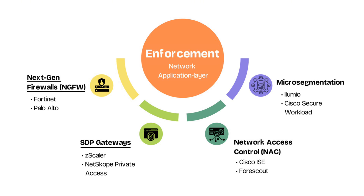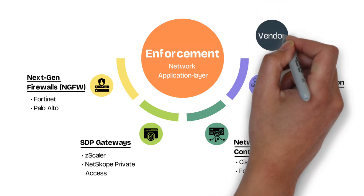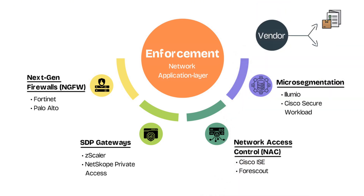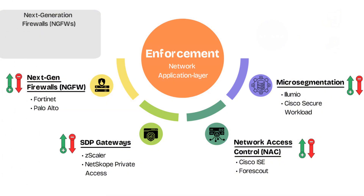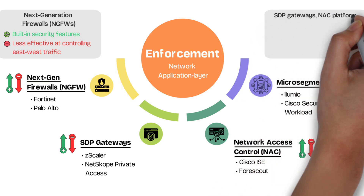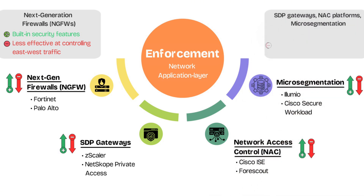The type of technology used to implement the PEP largely depends on the vendor, the type of product portfolio they have, and their particular area of expertise. While a detailed comparison is beyond the scope of this video, it's important to understand that each solution comes with its own strengths and weaknesses. For instance, traditional next-gen firewalls offer a broad set of built-in security features, but they may be less flexible in controlling east-to-west traffic within a network. On the other hand, solutions like STP gateways, NAC platforms, and micro-segmentation tools may not offer all the broad support of security inspection, but they're purpose-built as lightweight, cheaper solutions that allow you to enforce access closer to the resource, aligning tightly with zero trust principles.